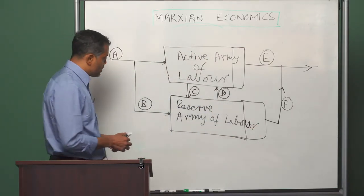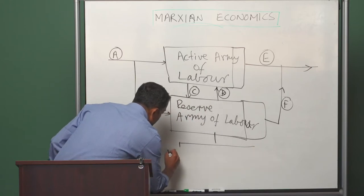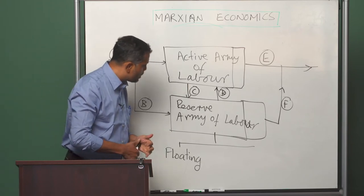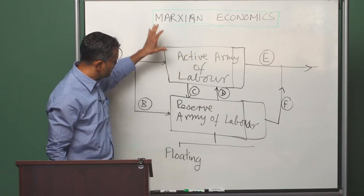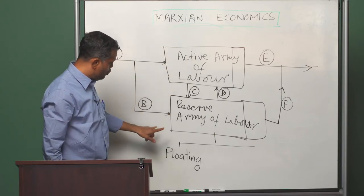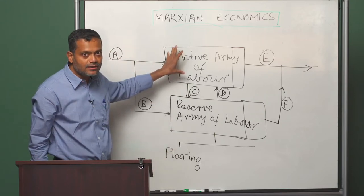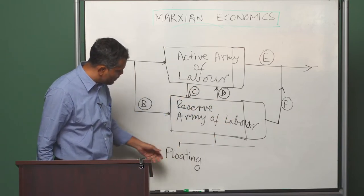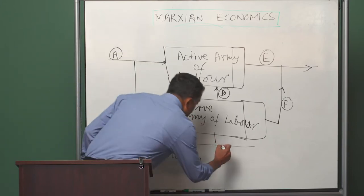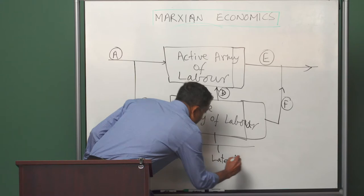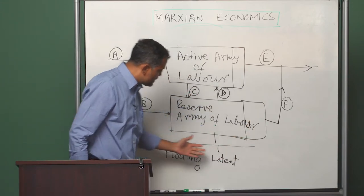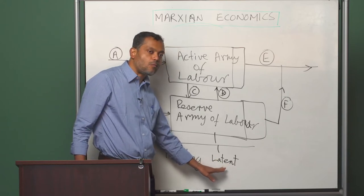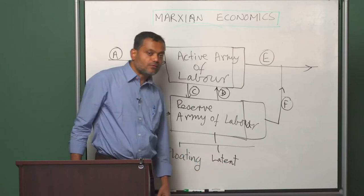The reserve army of labour can in turn be thought of as three different components. The first is the floating reserve army: all the workers who lost their jobs after being part of the active army — who had been employed but lost their jobs because of labour-saving technical change or because some businesses went under during a general recession or depression.